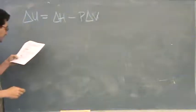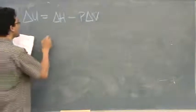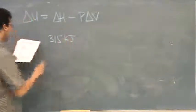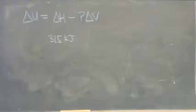So we find out that the system releases 315 kilojoules. When you think release, do you think negative or positive? Negative.